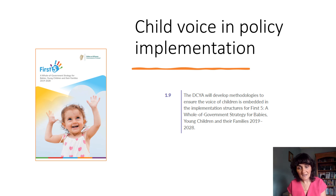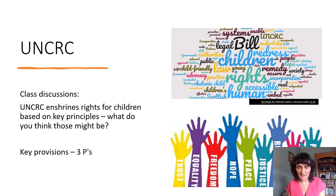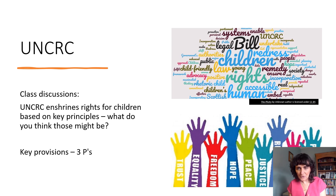You can see in a lot of different elements of policy development how important the child voice and child participation piece is. We use various resources to help students understand the importance of using child-friendly language when explaining the Convention to children and helping them understand their rights. One such resource is developed by the Children's Rights Alliance in Ireland. We develop students' understanding of the UNCRC through in-class discussions and brainstorming about the key principles and provisions — the three Ps: prevention, participation, and protection.